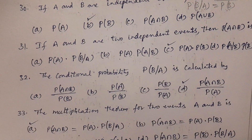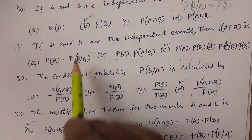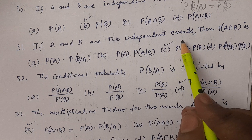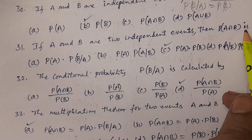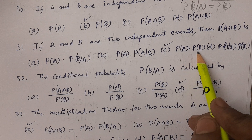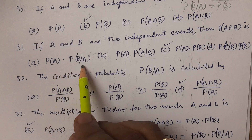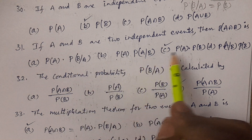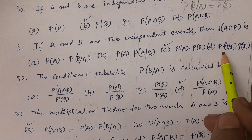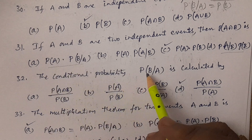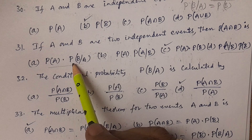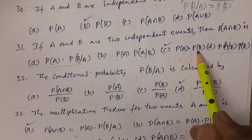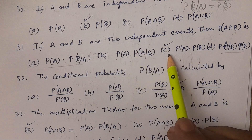Question number 31: If A and B are two independent events, then P(A∩B) is equal to probability of A into probability of B. That is the answer — very simple. The options include P(A)·P(B|A) and P(A|B)·P(B), which are multiplication theorem forms, but for independent events the answer is P(A)·P(B), option C.